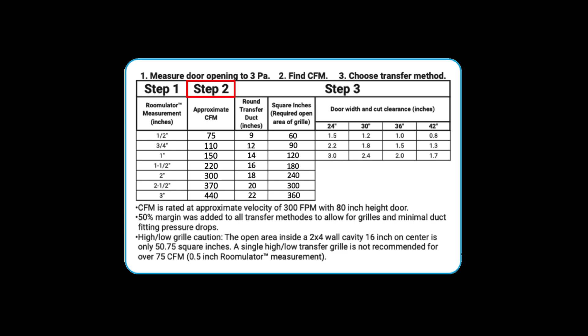Let's move on to Step 2, which tells us the corresponding CFM needed for transfer. In this case, we need to move approximately 210 CFM. Step 3 gives us three options for a passive transfer method: we can either use a round transfer duct, a through-wall transfer grill, or we can increase the door undercut at the bottom.